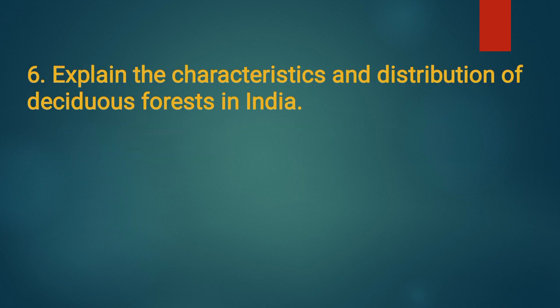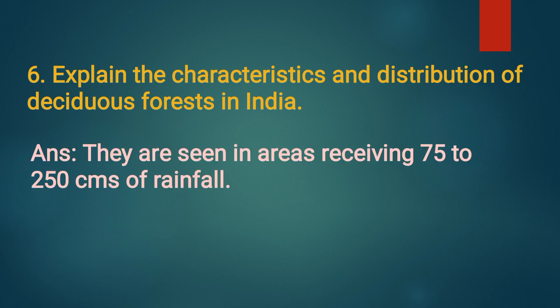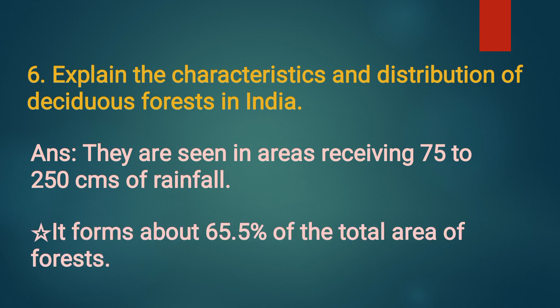Sixth question: explain the characteristics and distribution of deciduous forests in India. Answer: they are seen in areas receiving 75 to 250 cm of rainfall, and they form about 65% of the total area of forests.